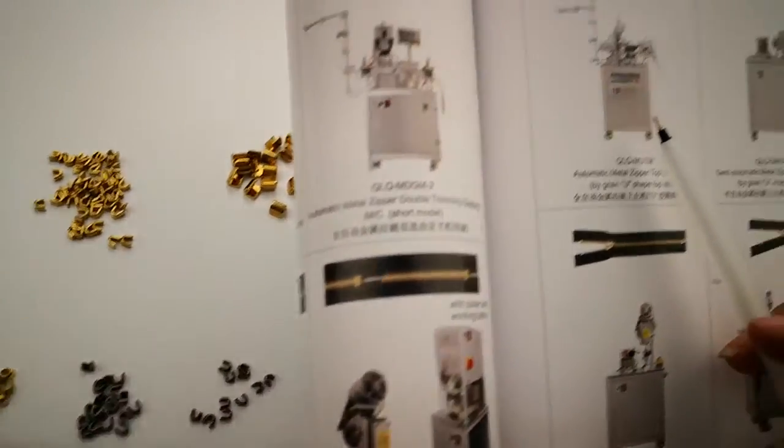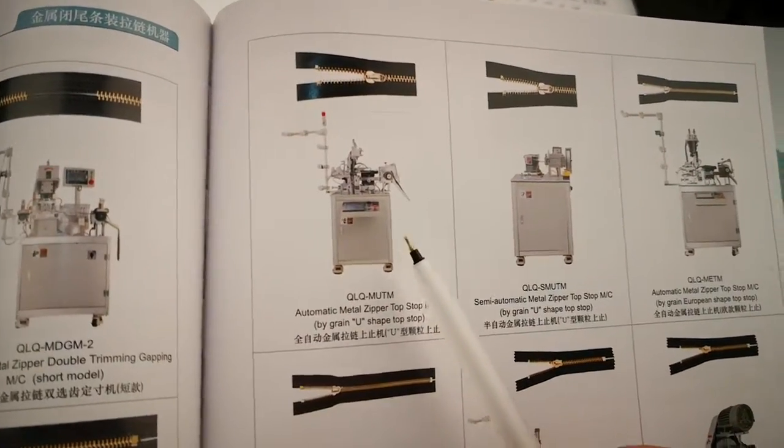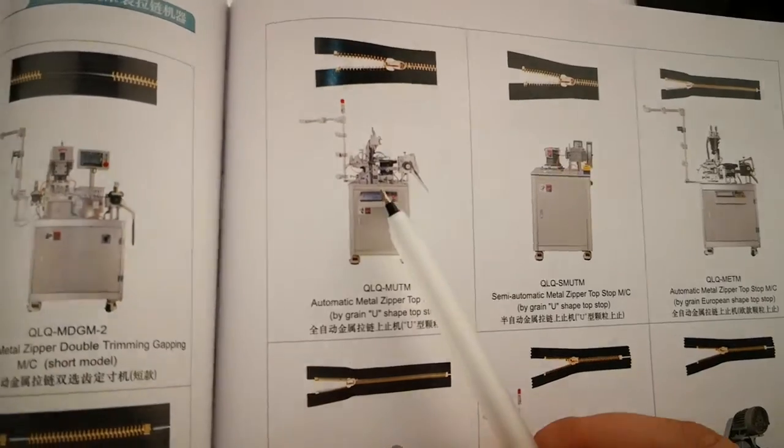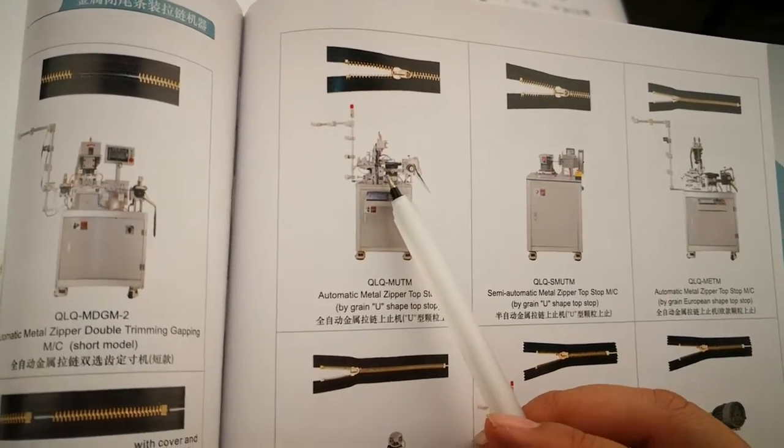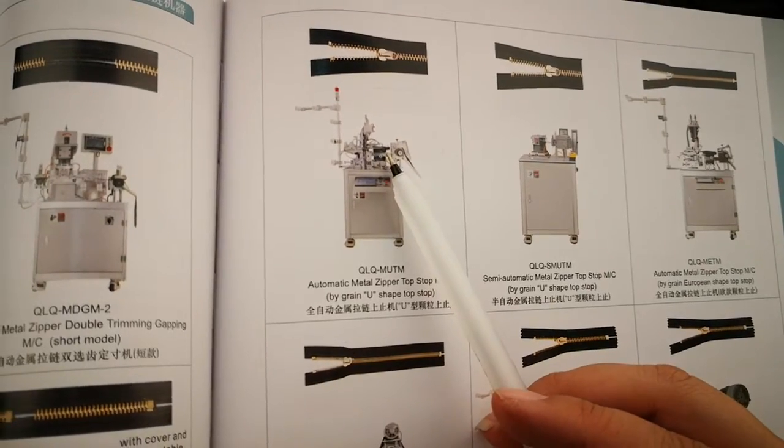For example, this is the automatic metal zipper top stock machine. If you have this machine available in your factory, then we must send you at least 0.2 kg samples for testing.